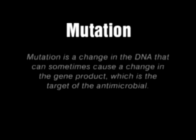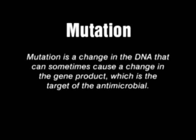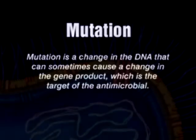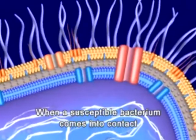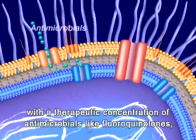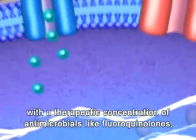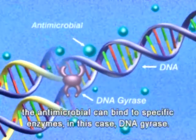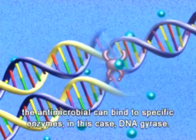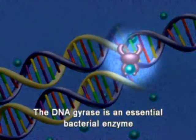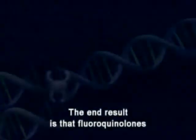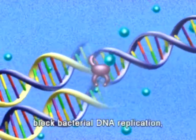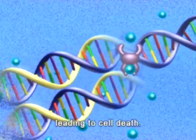Mutation is a change in the DNA that can sometimes cause a change in the gene product, which is the target of the antimicrobial. When a susceptible bacterium comes into contact with a therapeutic concentration of antimicrobials like fluoroquinolones, the antimicrobial can bind to specific enzymes — in this case DNA gyrase, an essential bacterial enzyme required for DNA replication. The end result is that fluoroquinolones block bacterial DNA replication, leading to cell death.